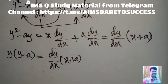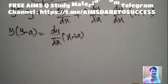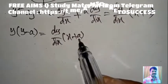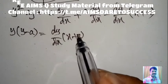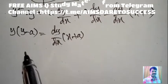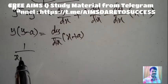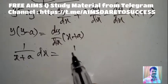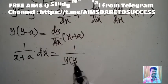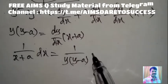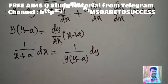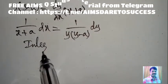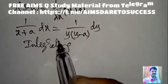Separating variables: dy/dx goes to one side, dx over (x + a) goes to the other. So 1/(x + a) dx = 1/[y(y − a)] dy. Variables are now separated — apply integration on both sides.